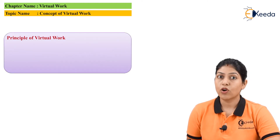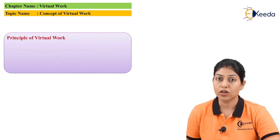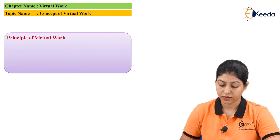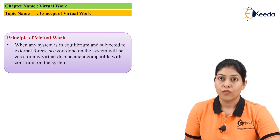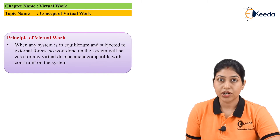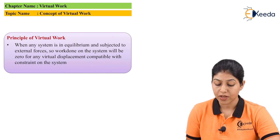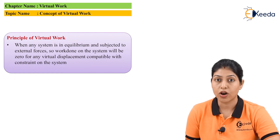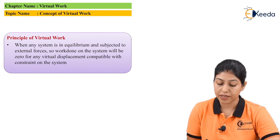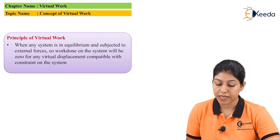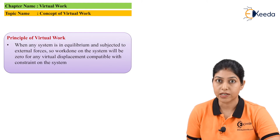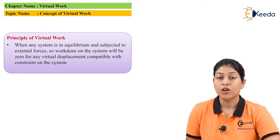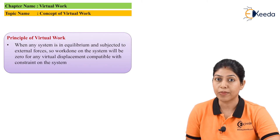Now if we want to define the actual principle of virtual work, the principle is: when any system is in equilibrium condition and subjected to external forces, the work done on the system by the number of forces against the displacement of the body — or against the displacement of the system — will be zero for any virtual displacement compatible with the constraints on the system. It means the virtual work value will be zero.